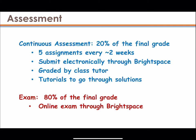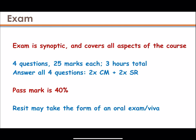The other 80% of the marks for the final grade come from the final exam, which this year will be done online again through Brightspace. The exam is synoptic in the sense that it covers all aspects of the course, related to the content of the lectures — nothing will be asked that isn't covered. There are four questions, 25 marks each, three hours in total. You must answer all four questions. Two are on classical mechanics and two are on special relativity. The pass mark is 40%. If anyone fails, the reset may take the form of an oral exam.